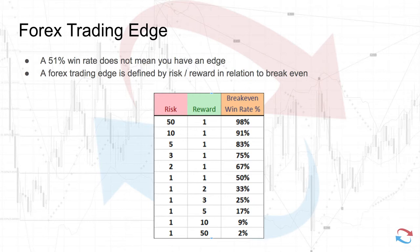There's been a lot of talk online that in order for you to have an edge in a market you'd have to have at least a 51% win rate, but a 51% win rate does not mean you have an edge. An edge in the market is basically defined by your risk/reward in relation to your break-even rate.